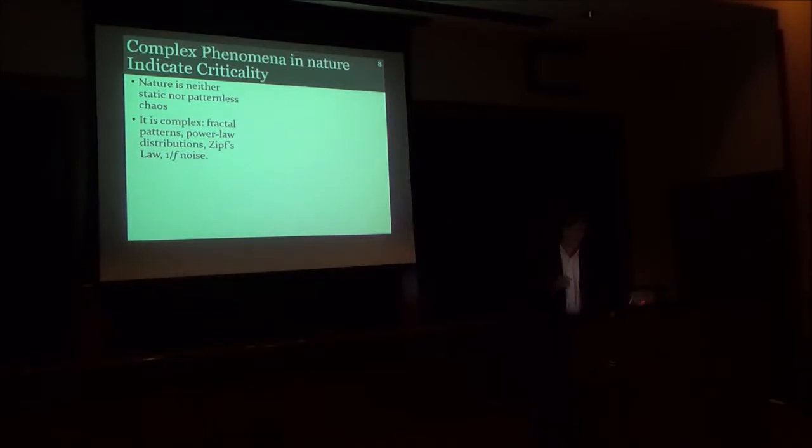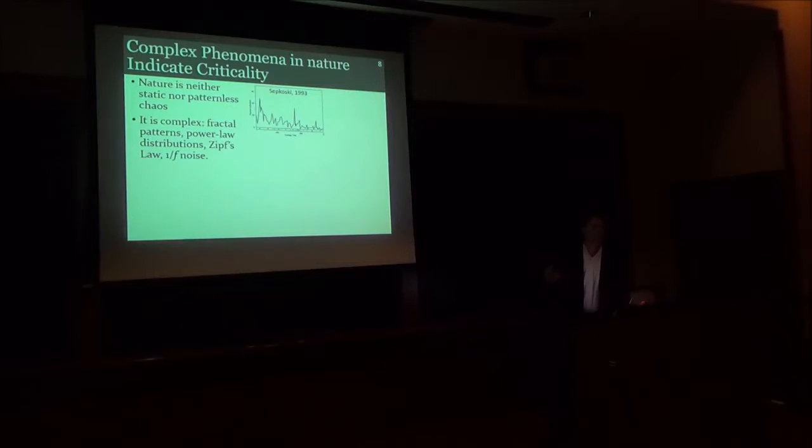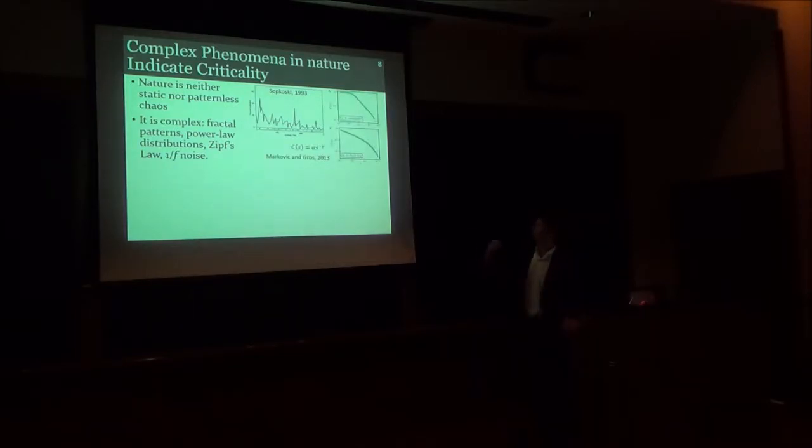As an example of such a complex phenomenon in nature, we can think about the extinction rate of species over time. If we look at this signal over time, it's clearly a very complex signal with fluctuations at varying scales year by year. What's interesting is that if you were to take these fluctuations and plot out the distribution of their sizes, they often follow what is called a power law. What this means is that the probability of seeing a fluctuation of size S can be related to that size S by this mathematical equation with some negative exponent.